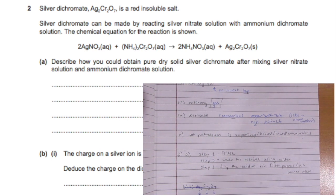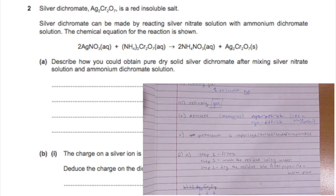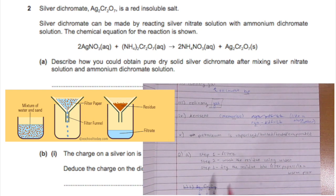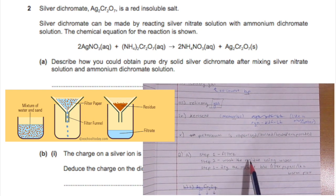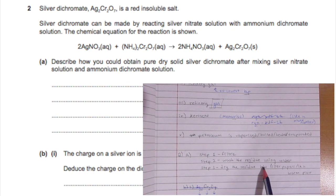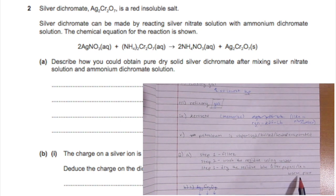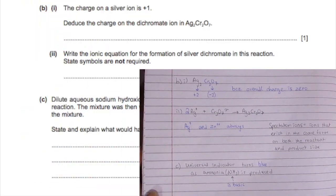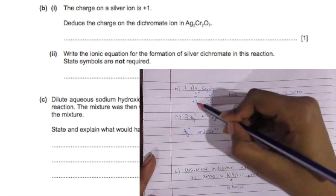To get the ammonium dichromate, we filter it from the solution and wash off the residue—which is the silver dichromate—using water to ensure there's no ammonium nitrate with it. Then we dry it between filter papers or place it in a warm area.